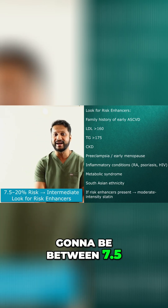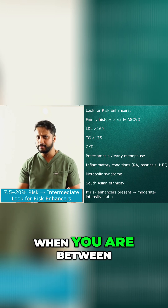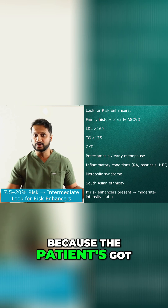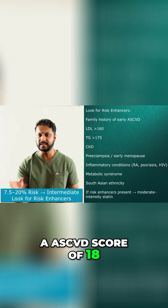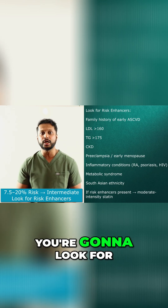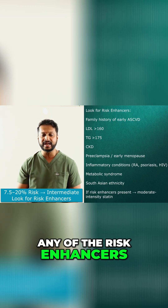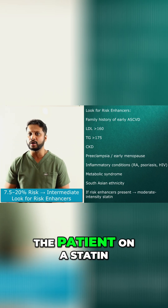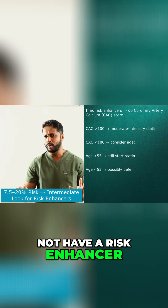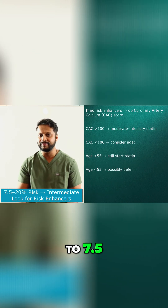The next group is going to be between 7.5 to 20. The risk is getting much higher in this range. This patient has an ASCVD score of 18. What are you going to do? Again, you're going to look for risk enhancers as shown here. If the patient has any risk enhancers, you're directly going to put the patient on a statin. Now if the patient does not have a risk enhancer, what's different in this group compared to the 5 to 7.5 group?